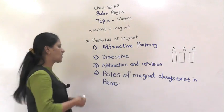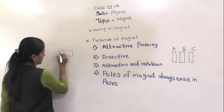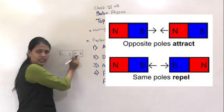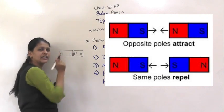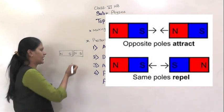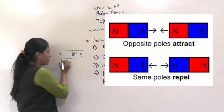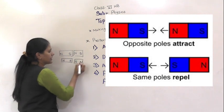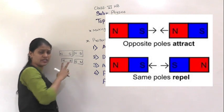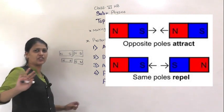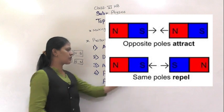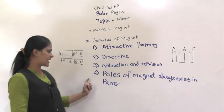So, attraction and repulsion: when north and south poles come together, the two magnets will get attracted — unlike poles attract. While if we take south-south or north-north, as these are like poles, they will not attract; they will repel each other and move away.